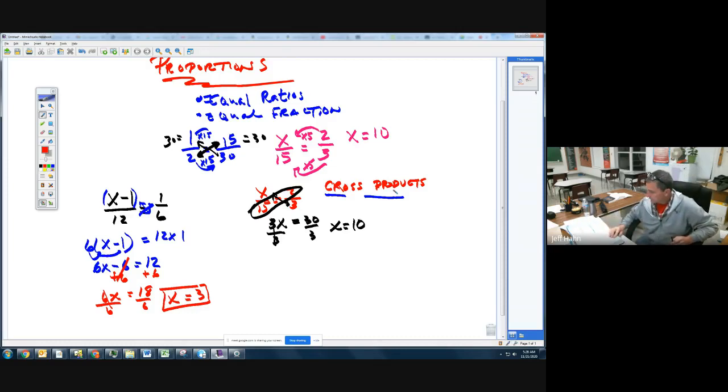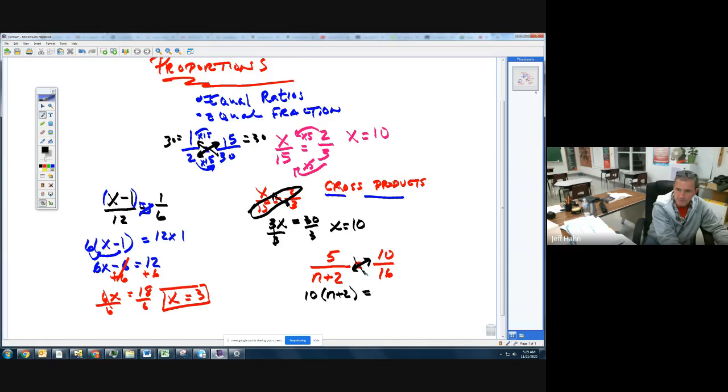Let me look and see if there is something a little bit more challenging or complicated than that. We'll just do one more. Nothing terribly difficult. We'll go over here. Let's do 5 over n plus 2 equals 10 over 16. 10 over 16. Again, if I do some cross products here, I'm going to take 10 times the quantity n plus 2. I guess we'll do that down here. 10 times the quantity of n plus 2. And that is going to equal whatever 5 times 16 is.